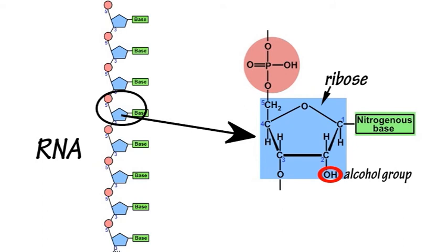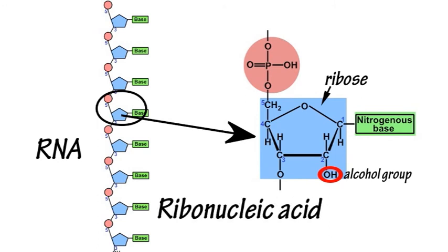And when the sugar component is ribose, then the polynucleotide is RNA, or ribonucleic acid.